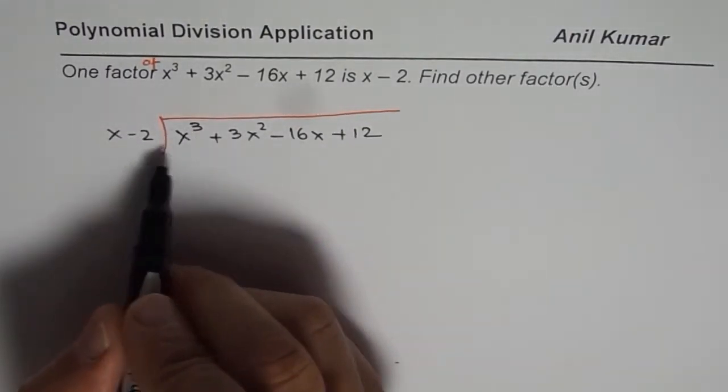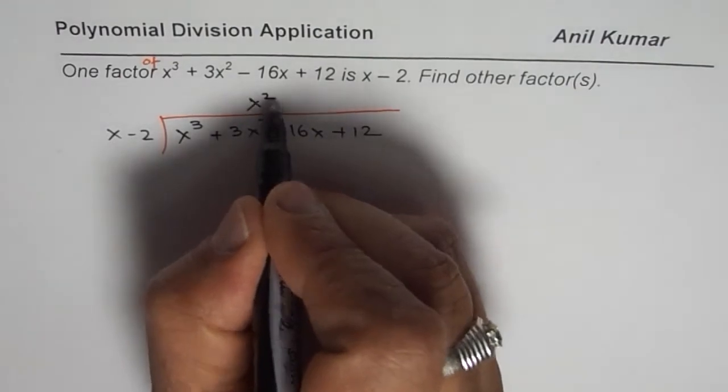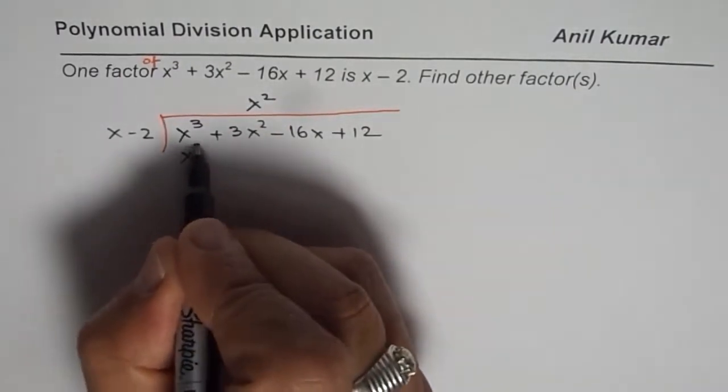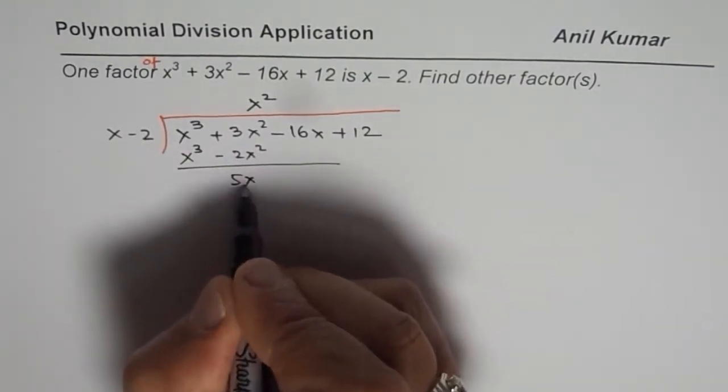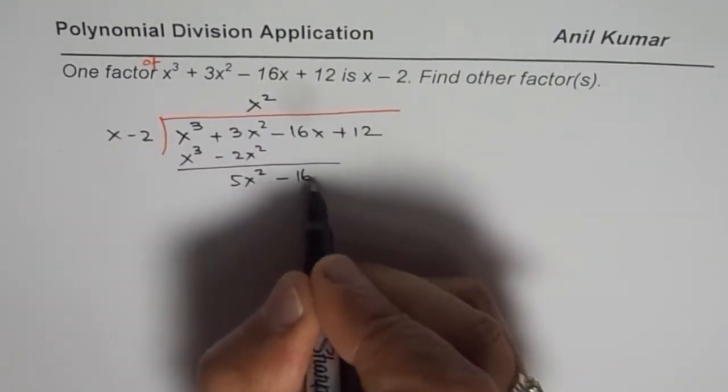So we will take care of x³. So we have to multiply by x², the binomial. You get x³ - 2x². Then you have to take away these terms, so you get 5x² - 16x.